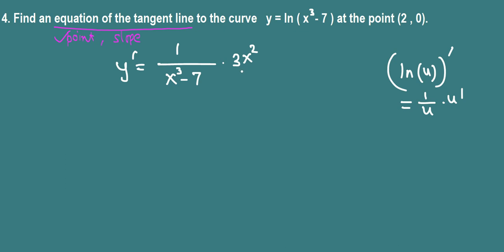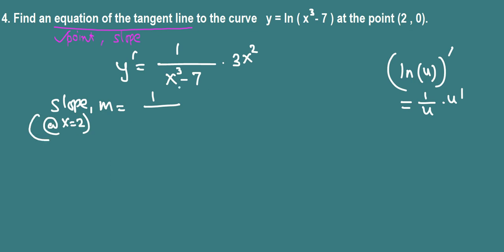This is the slope of the tangent line at any point (x, y), but we want this slope at the particular point (2, 0), so we replace x by 2. The slope m equals 1 over (2 cubed minus 7) times 3 times 2 squared — that's 1 over (8 minus 7), which is 1, times 3 times 4, which is 12. So the slope is 12.